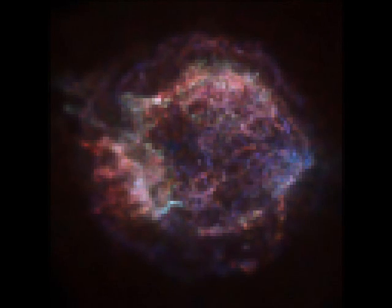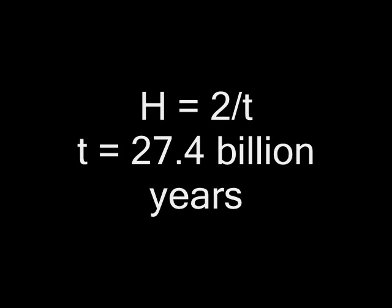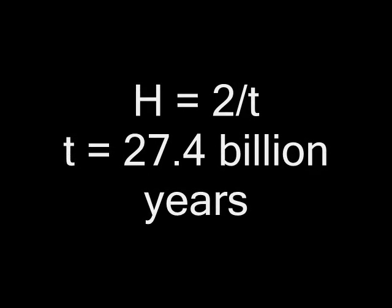Guess what? Observations of a special type of event called the type 1a supernova has shown us that the universe is expanding at an accelerating rate. In this case, H is equal to 2 divided by T, and that makes the age of the universe about 27.4 billion years.